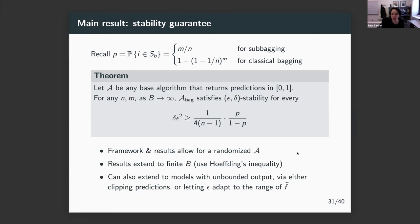A couple of extensions: the algorithm A can be treated as randomized rather than deterministic. If you have a finite number of bags B rather than infinite, the right-hand side becomes a bit more complex, but as soon as the number of bags is on the order of n, you don't really lose anything. If you want predictions to lie in an unbounded space, there are extensions but things get more complex — the scale of the stability epsilon perturbation has to account for the scale of the output predictions.